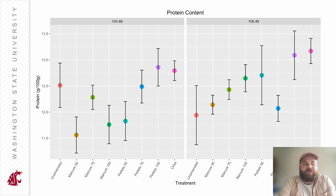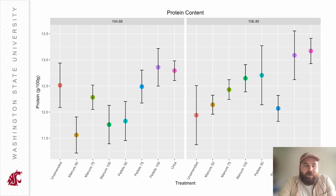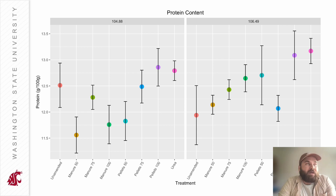Here's a similar graph showing protein. On the y-axis you have protein in grams per hundred grams of sample — or percent protein. Again, you can see that the different fertilizer treatments are having some sort of impact on our quinoa seeds grown in western Washington.